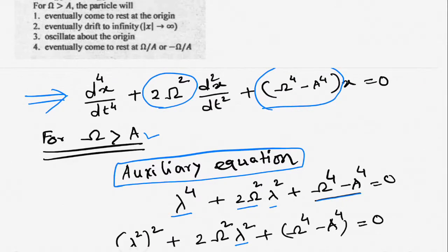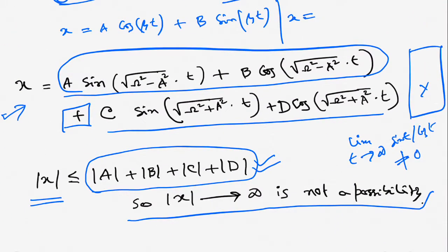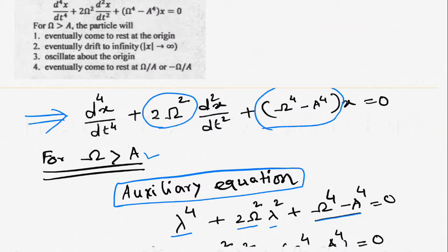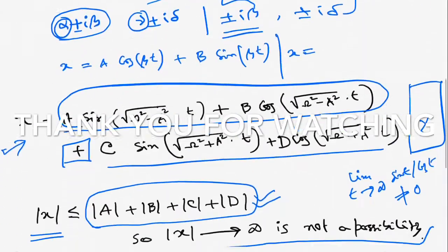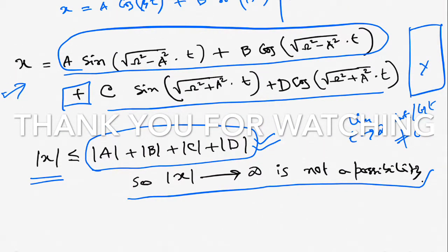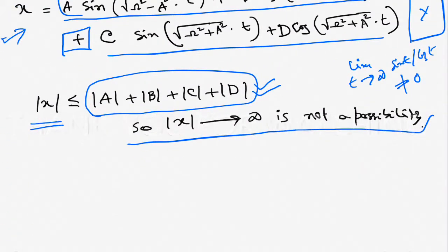The last option — that x → ±ω/a as t → ∞ — is also not a possibility, because as t → ∞ the functions sin(t) and cos(t) have no limit. So the last option is eliminated as well. The only remaining option is that the particle oscillates about the origin, so this must be correct. This is expected because of the presence of sine and cosine functions — they are oscillating, and their sum will also oscillate. For some values of t, x will be positive, and for others it will be negative, so the particle oscillates between some bounds about the origin. Therefore, the third option is correct.